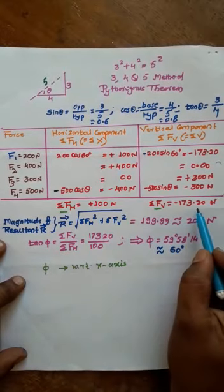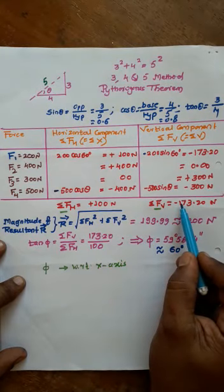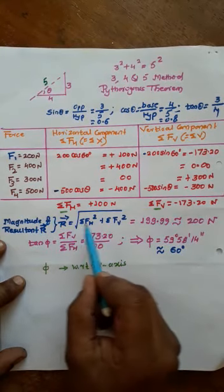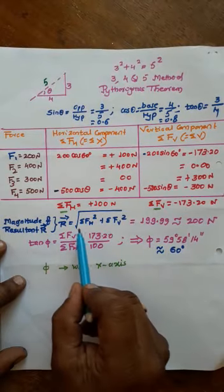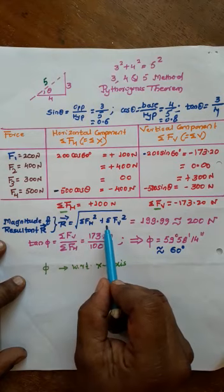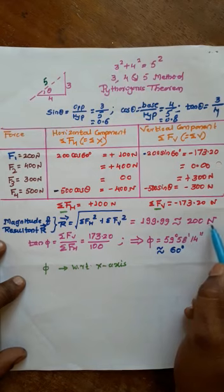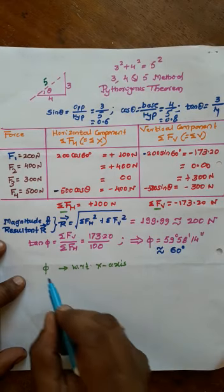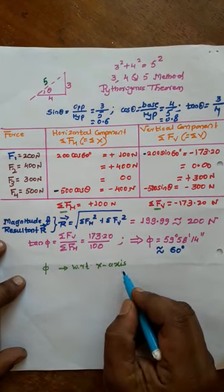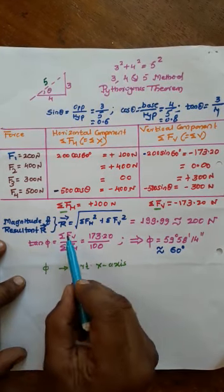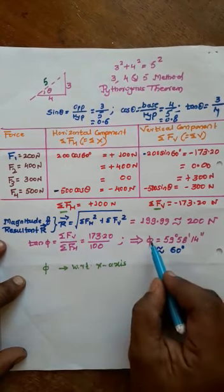After the algebraic summation: ΣFH is positive and ΣFV is negative. The magnitude of the resultant R is given by R = √(ΣFH² + ΣFV²) ≈ 200 N. The angle φ made by the resultant with the x-axis: tan φ = ΣFV / ΣFH = 173.20 / 100, giving φ = 60°.